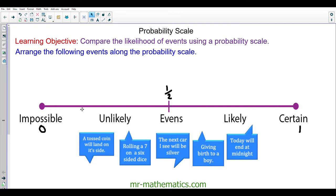We're going to place each of these events somewhere along our probability scale. A tossed coin will land on its side. Well, the width of a coin is very small compared to the head and tail side. So this is very unlikely to happen. It's not quite impossible but it is very unlikely.